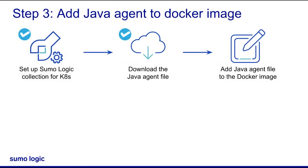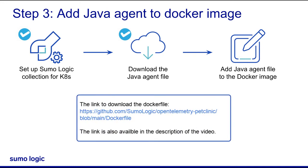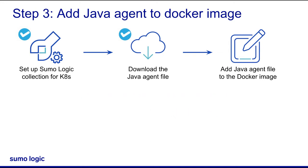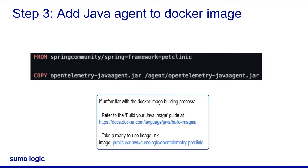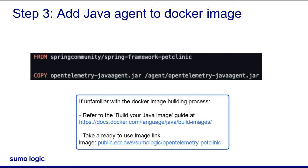The next step is to add OpenTelemetryJavaAgent.jar to the Java application Docker image. Remember, the app must be developed in Java 8 or a newer version. For this demo, I'll create the Java app Docker image based on the Spring Pet Clinic application. The link to download the Docker file is provided in the description of this video. The Docker file is where the OpenTelemetryJavaAgent.jar file will be added. Here's how I've added the OpenTelemetryJavaAgent.jar file to the Spring Pet Clinic Docker image, assuming that the auto-instrumentation jar is in the /agent directory. After that, I need to build a new Docker image and publish it in a repository accessible by a Kubernetes cluster. If you're not familiar with the Docker image building process, please refer to the Build Your Java Image Guide, or take a ready-to-use image with Java auto-instrumentation already bundled from the Public ECR AWS Sumo Logic OpenTelemetry Pet Clinic link.